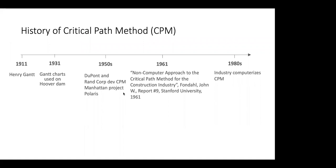Let's jump into CPM — a little bit on the history. I always feel that we're part of a noble field and should take a look at the folks that came before us. Gantt charts trace to 1911, used on the Hoover Dam by Bechtel Corporation. DuPont and the Rand Corporation developed CPM for the Manhattan and Polaris projects — they developed it for building the nuclear bomb and the nuclear submarine. In 1961, Fondahl writes a non-computer method for using CPM in the construction industry. In the 1970s and 80s, the industry computerized it, and we've been stuck on it ever since. What I'm going to show you today is maybe two generations beyond what's available today.